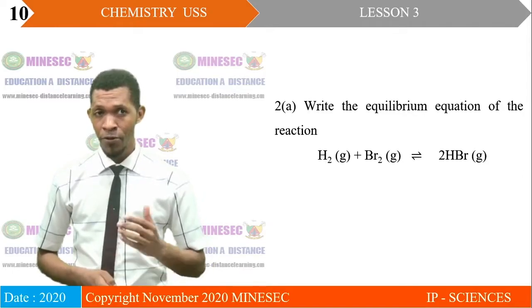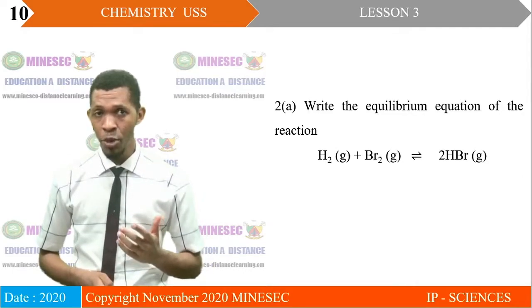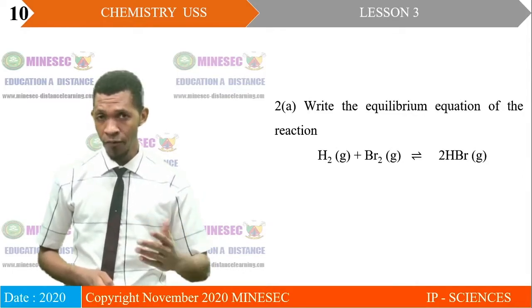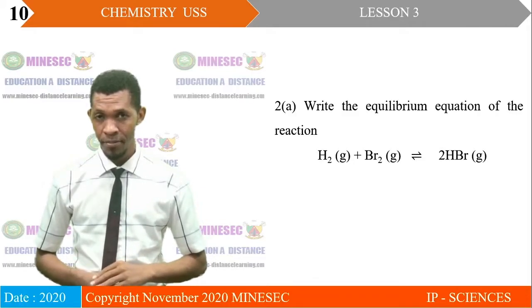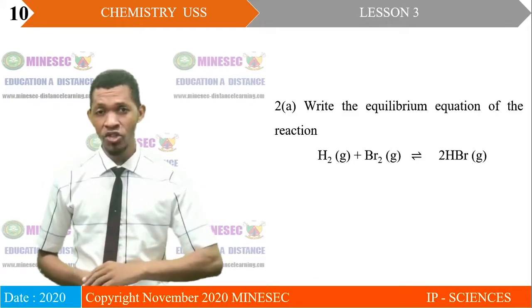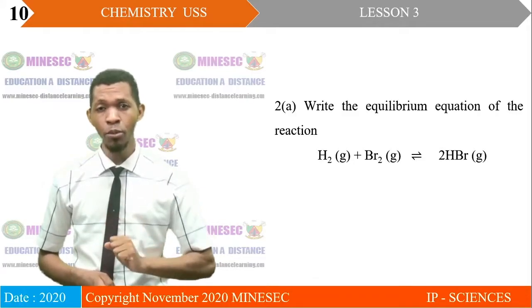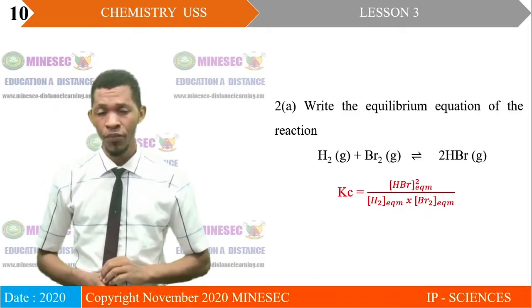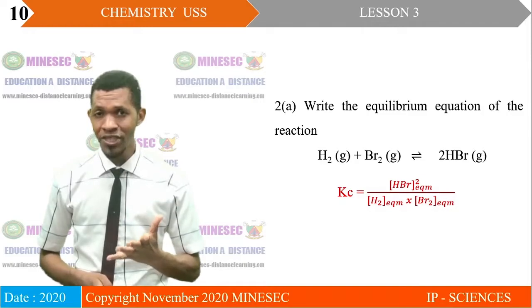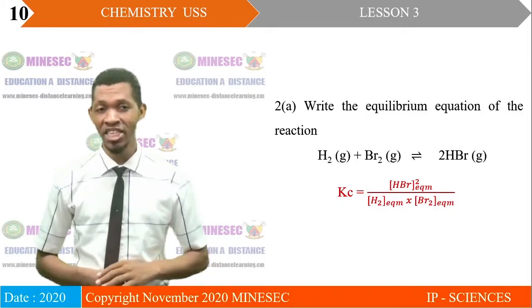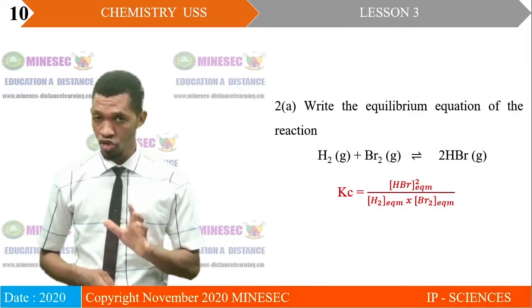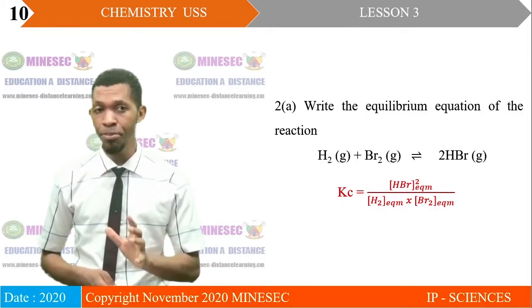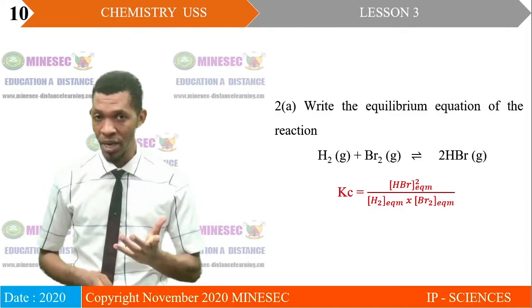Part 2A: write the equilibrium equation of the reaction. Based on the equilibrium law, the equilibrium constant Kc is equal to the molar concentration of hydrogen bromide at equilibrium, raised to the power 2, divided by the molar concentration of hydrogen at equilibrium times the molar concentration of bromine at equilibrium.